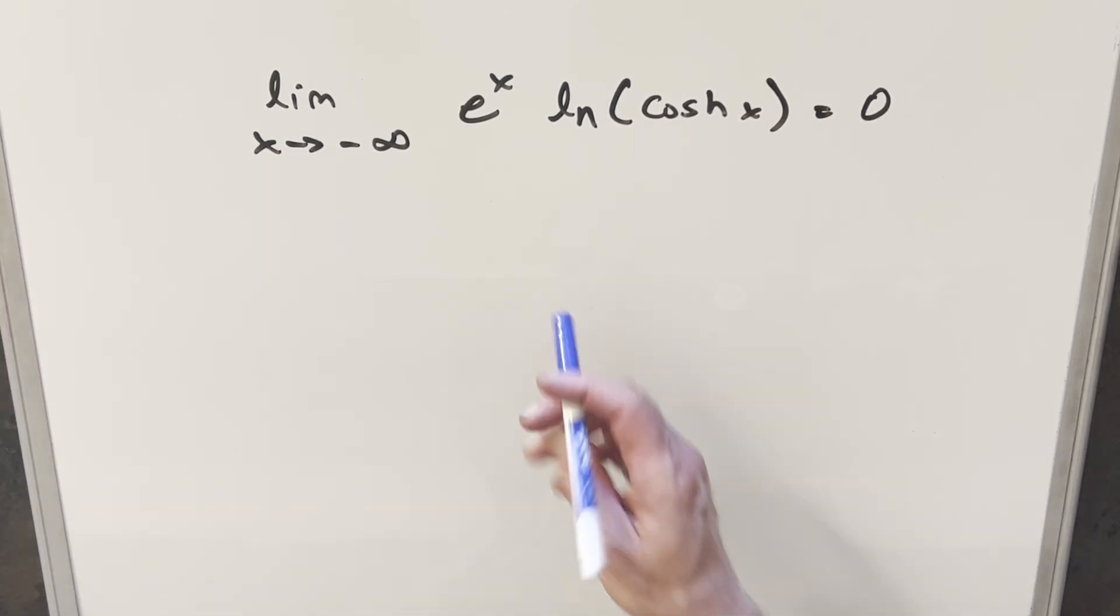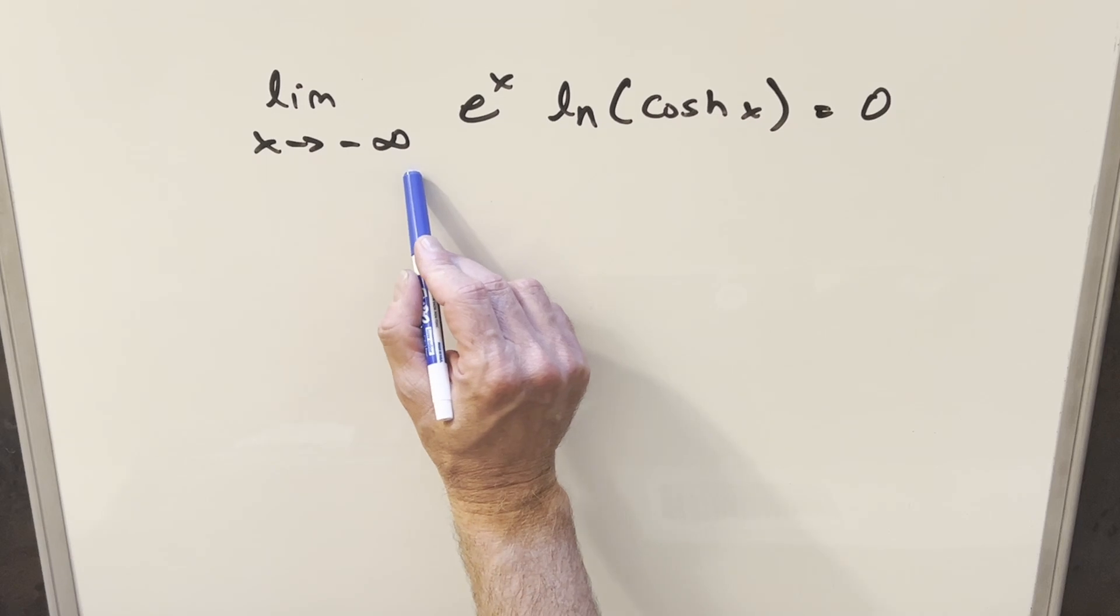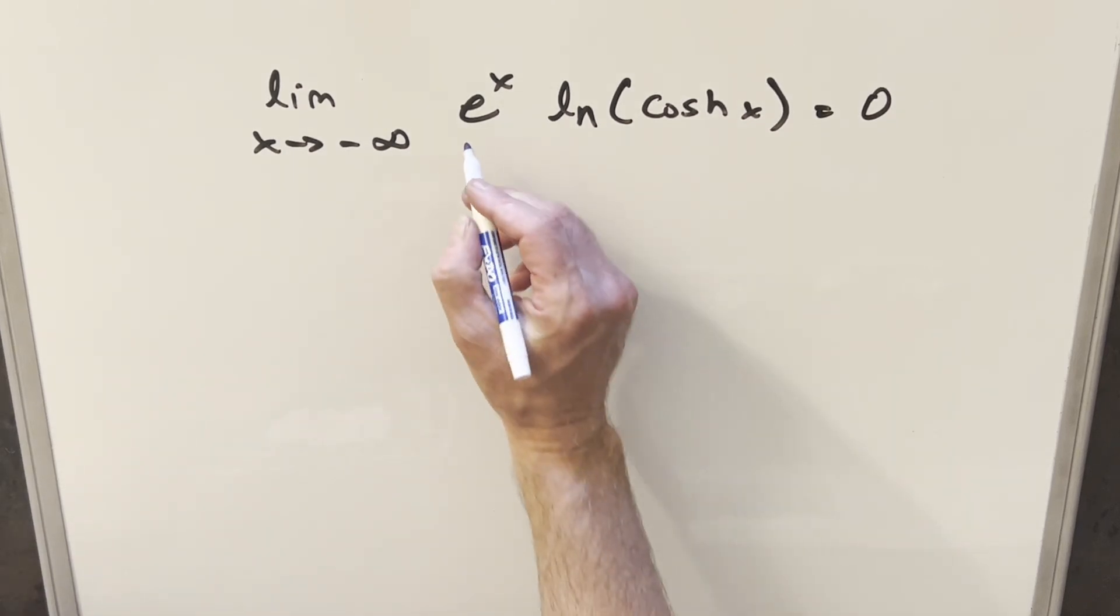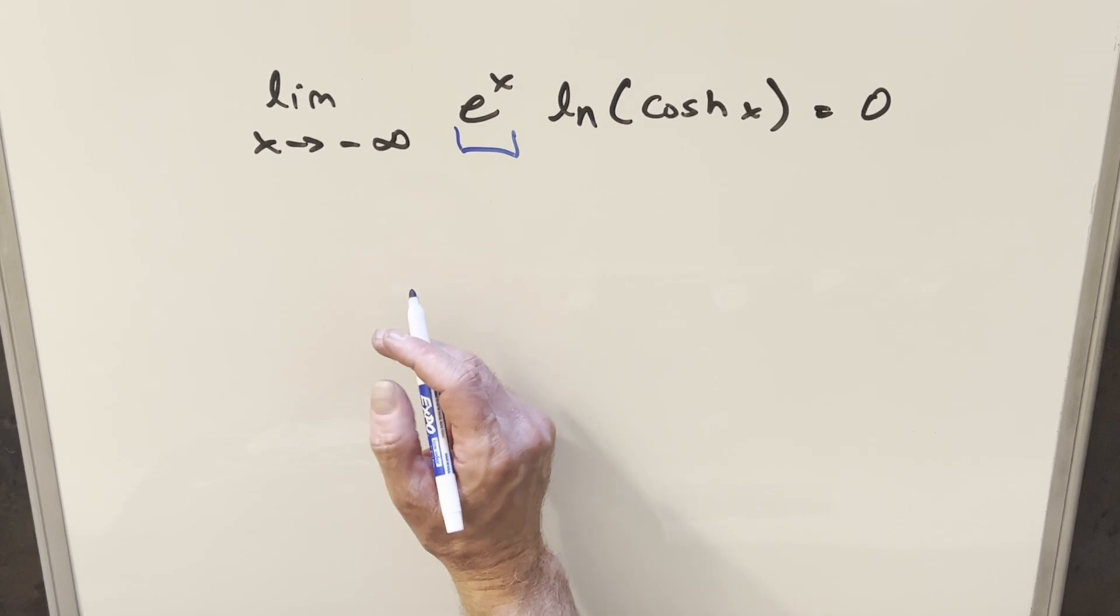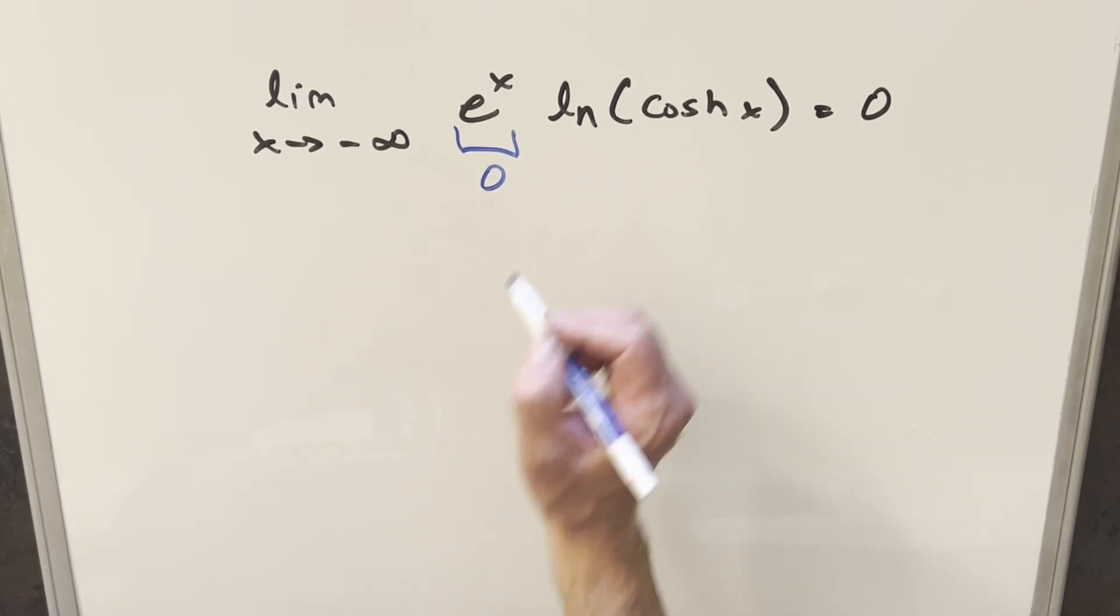So to get started with this, I just want to get a sense of what happens when we're going to minus infinity. And this first piece is easy, right? Because when you plug minus infinity into the exponent, this first part needs to be zero.